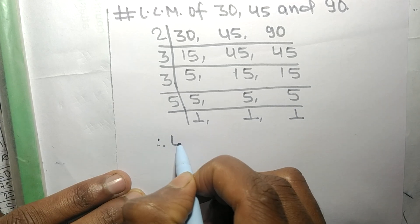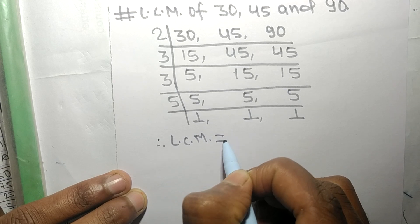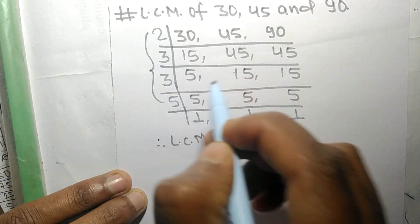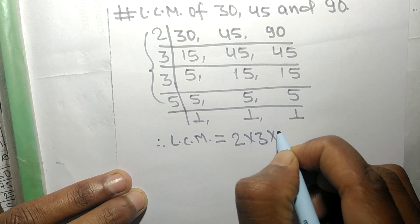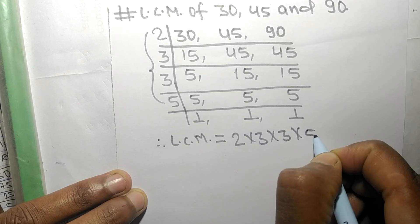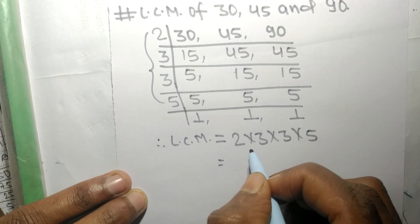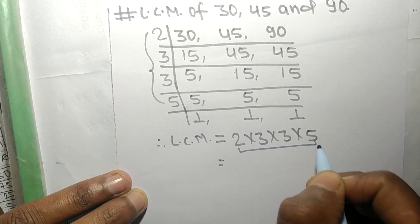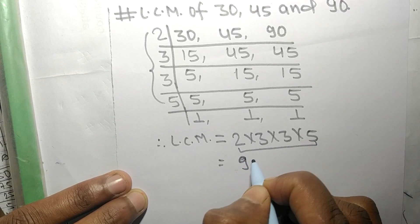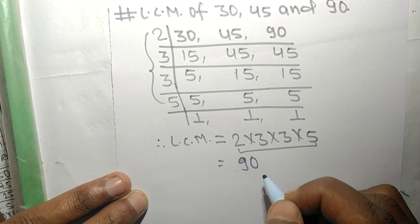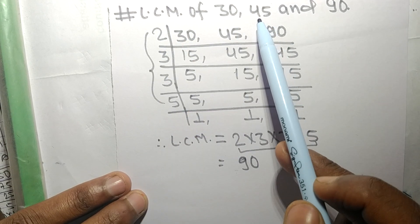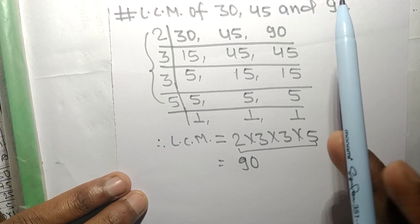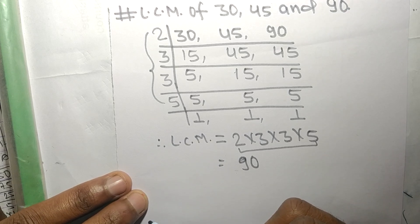The LCM is equal to 2 times 3 times 3 times 5. By multiplying all these numbers we get 90. So 90 is the LCM of 30, 45, and 90. That's all for today — thanks for watching.